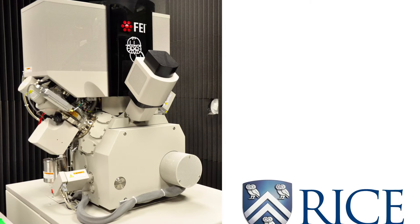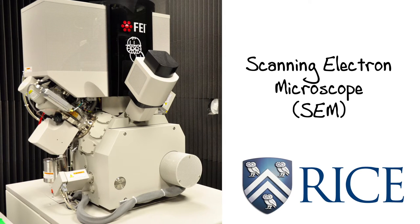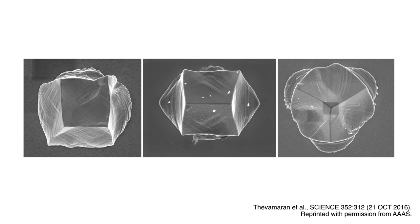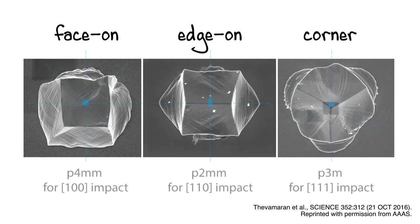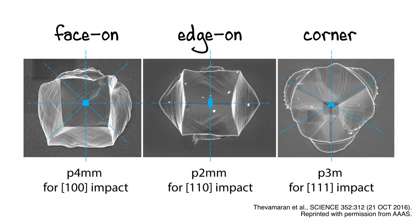When we look at the impacted microcubes in a scanning electron microscope, we find interesting deformation characteristics. Depending on the impact orientation, whether it's on a face, an edge, or a corner, the deformed cubes preserve extrinsic particle-shaped symmetries.